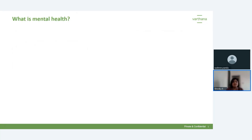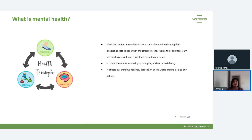Mental health is a state of mental well-being. As per the WHO definition, if a person is able to cope with different emotions and stress, function to their potential, or realize their ability, then their mental state is considered to be good. It comprises your emotional, psychological, and social well-being — how you're functioning in different areas of your life, how you're perceiving things, how you think, how you feel, and how you're coping with feeling overwhelmed.